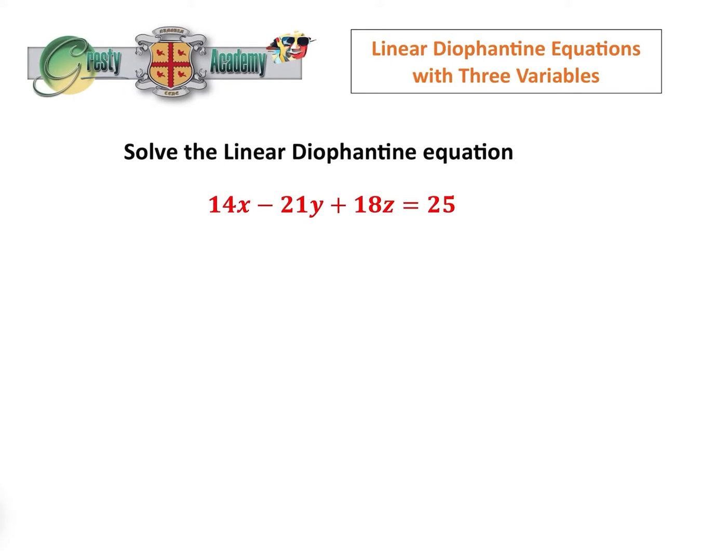This is an interesting question. We're asked to solve the linear Diophantine equation 14x minus 21y plus 18z equals 25, which is a Diophantine equation with three variables.